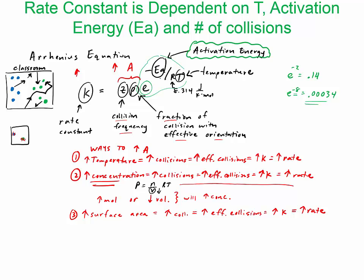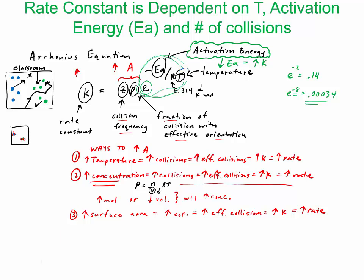Conversely, if we plug in small numbers for Ea, it raises this value and raises K. So in summary, if we lower the activation energy — which is exactly what we see on the energy profile, lowering the hump — it increases the rate constant K. Regarding temperature: if you raise the temperature, you lower this exponent term, and as we just showed, plugging in smaller values raises the rate constant, which speeds up the reaction.